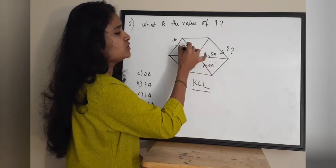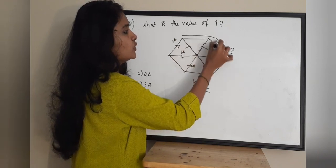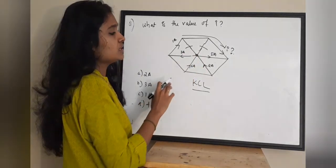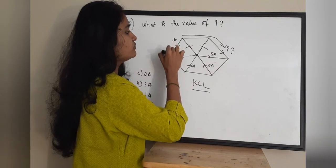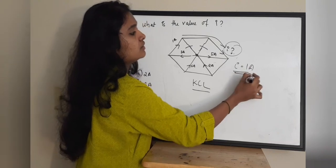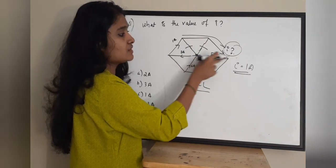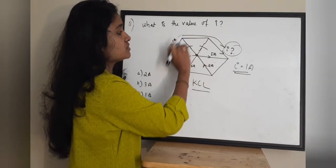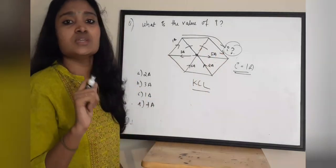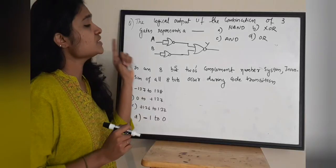There is a 1 ampere current flowing through one branch, and this 1 ampere is not being split anywhere — it is flowing directly through that path. Since the central node is already balanced with the other currents, this current i must be flowing along that separate path. Therefore the value of current i equals 1 ampere, and the correct answer is option C.